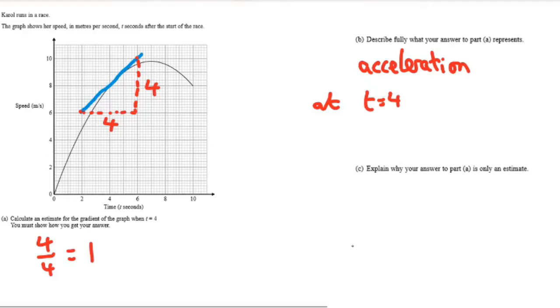Finally, then, explain why this answer is only an estimate. Well, it's only an estimate because we can't guarantee we've drawn this line perfectly with the same gradient as the curve at that point. So, we've tried our best, but we can't guarantee that the gradients match.